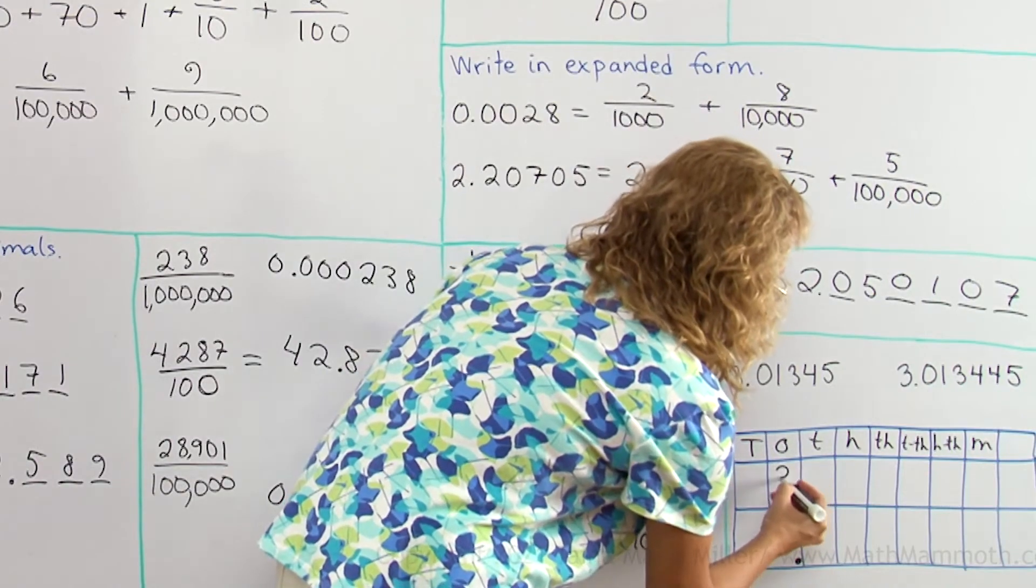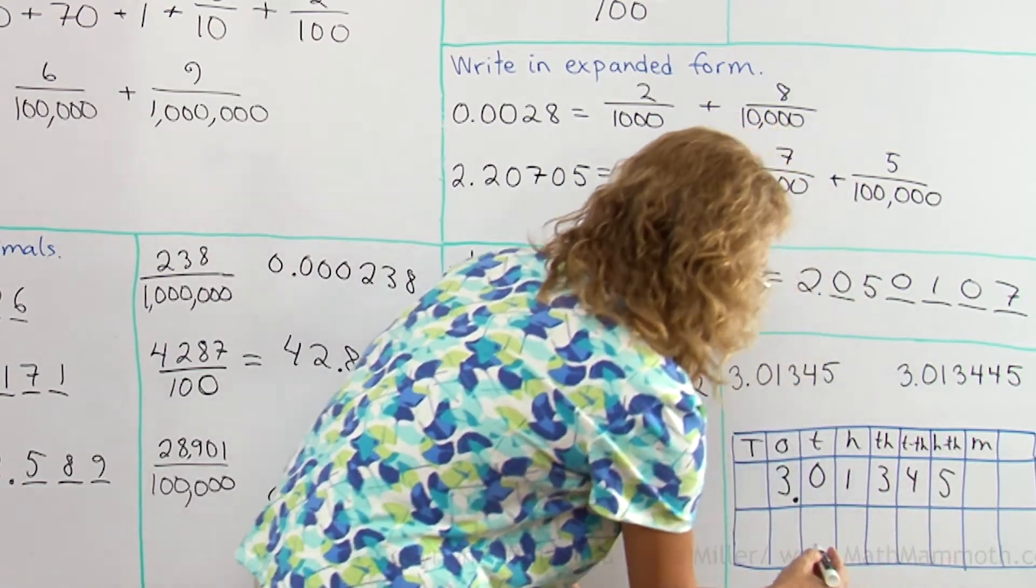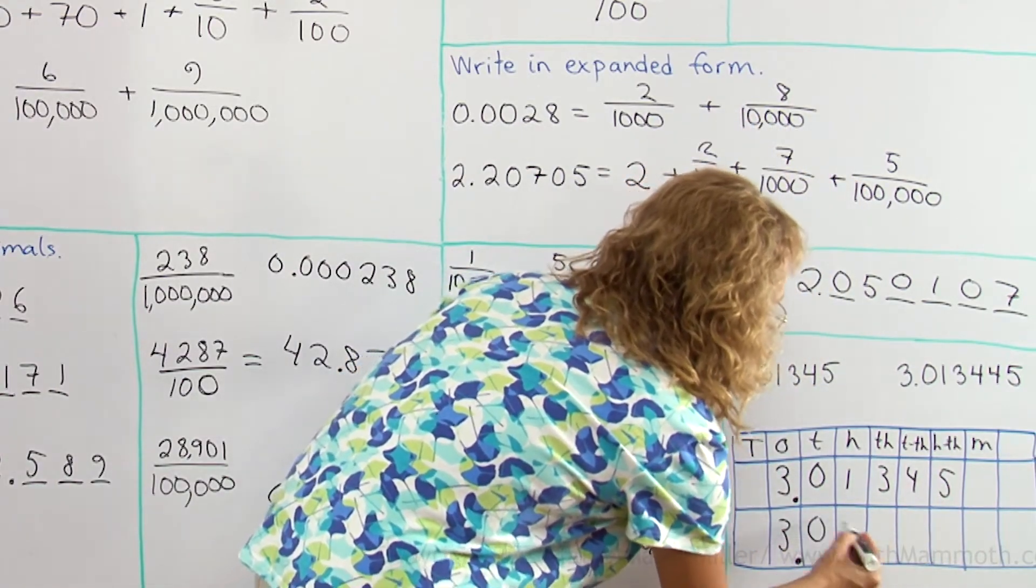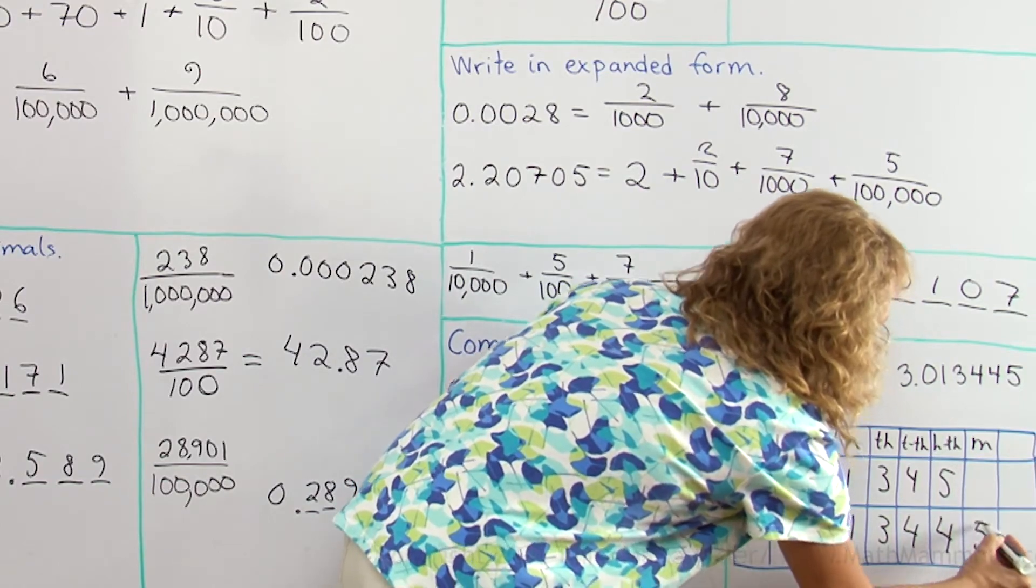Three points and then zero, one, three, four, five. And the other one is three point zero, one, three, four, four, five.